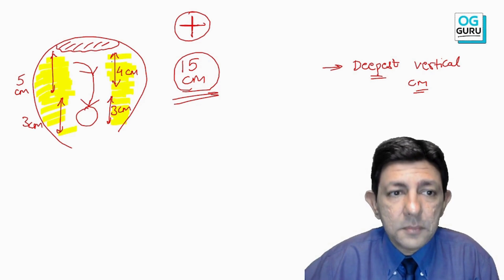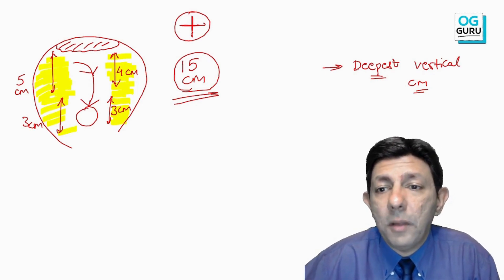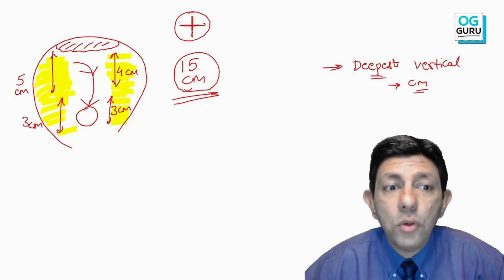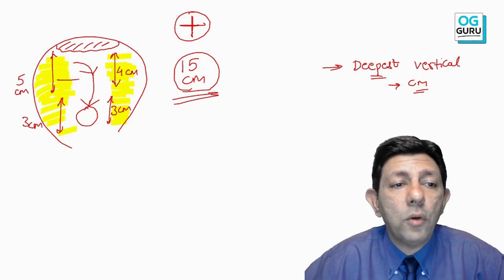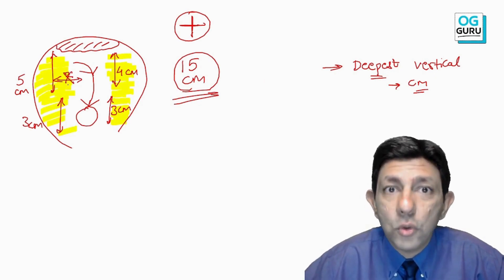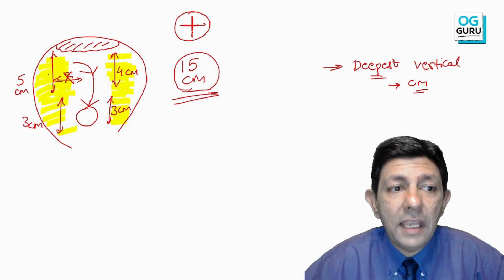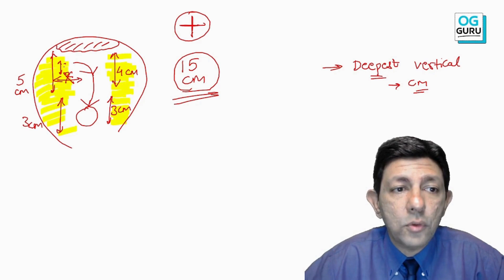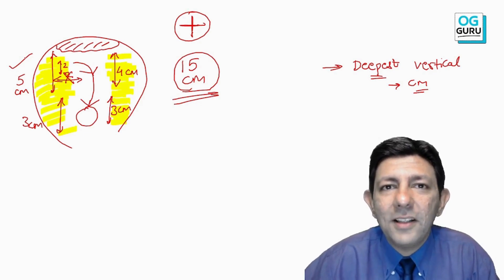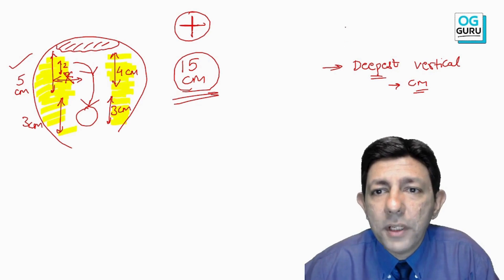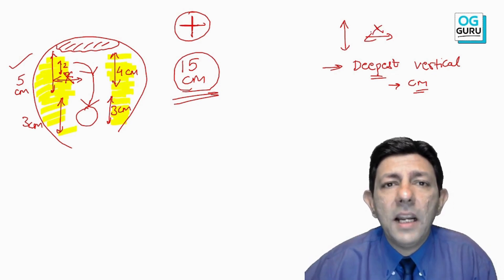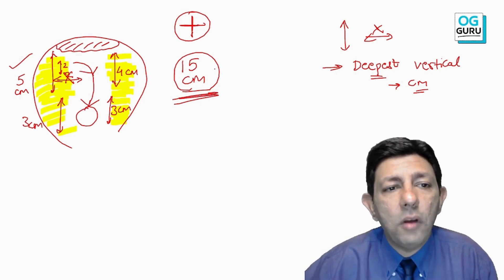This could be an image-based MCQ where they give you a figure and ask you to calculate the AFI. Key points: measurement must be in centimeters, and the pocket must be vertical. If a horizontal pocket of 2 cm is also shown, do not count it. If two vertical pockets are present in one quadrant — say 5 cm and 2 cm — choose the deepest, which is 5 cm.